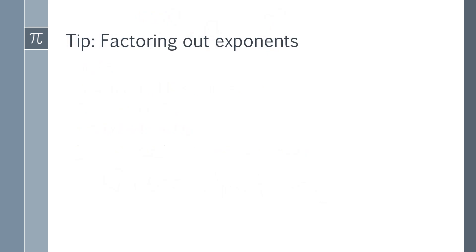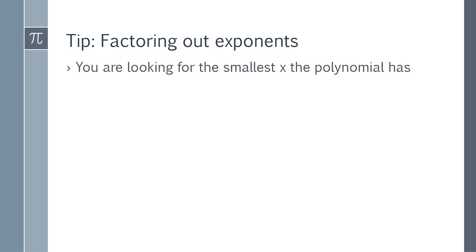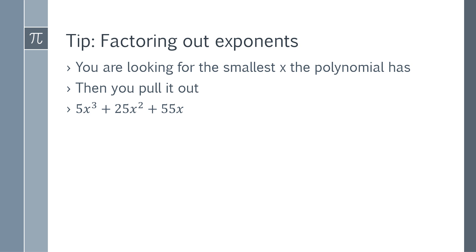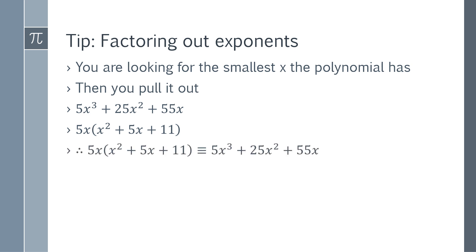When you factor out exponents from a polynomial, keep in mind you are looking for the smallest x possible that the polynomial has, and then you pull out that smallest x. Going back to the problem we worked, we had at least an x we could pull out for all three terms of the trinomial, which gives us 5x. By the greatest common factor, the factored form is equivalent to the original expression.